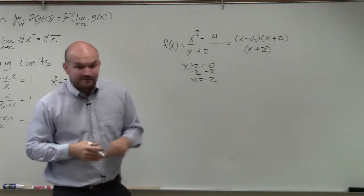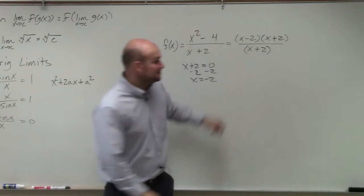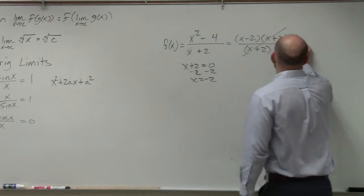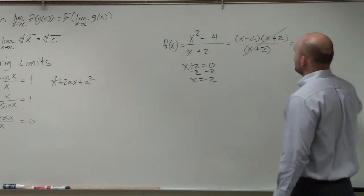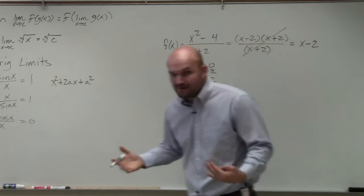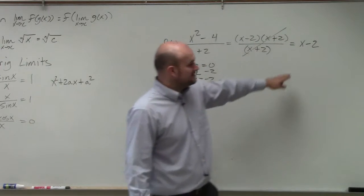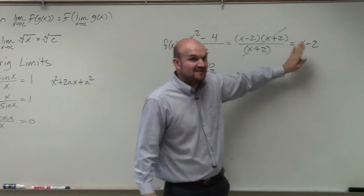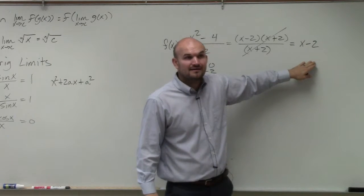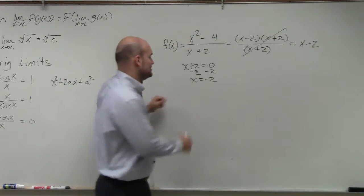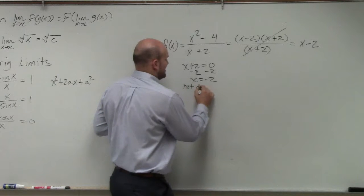Now, by using the division property, I see that the x plus 2's divide out, leave me just with the equation x minus 2. However, that's my simplified expression, but what is the value that's still not defined? x still cannot equal negative 2, it is not defined.